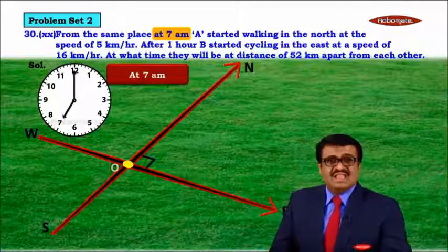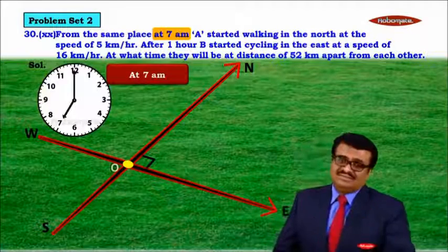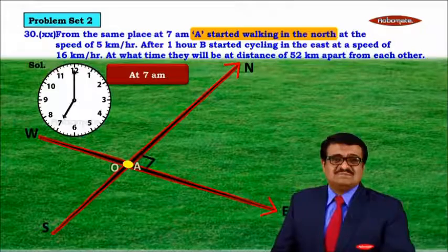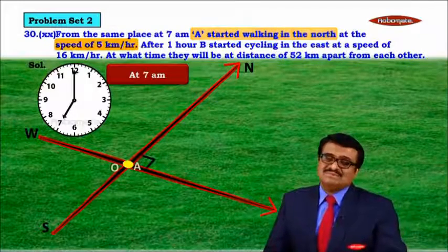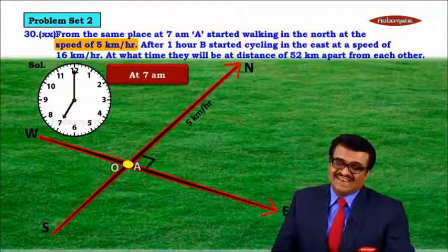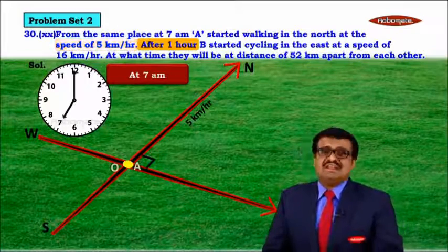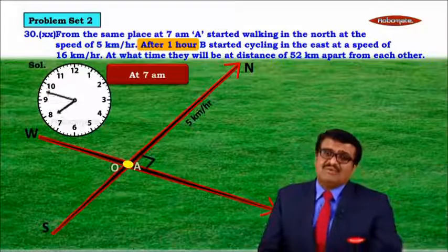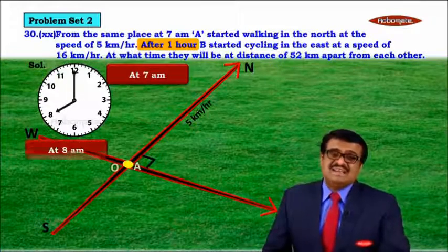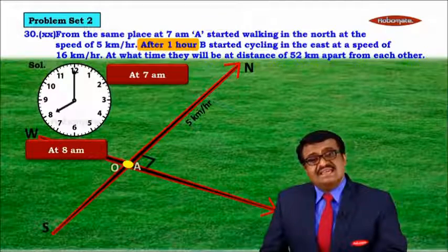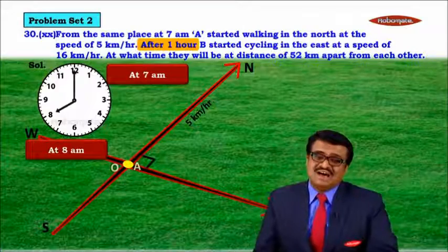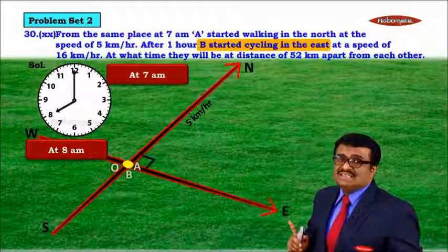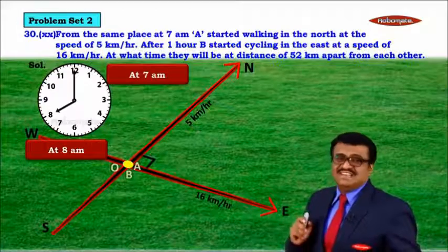At 7 a.m., A started walking in the north direction — that is, upwards — at the speed of 5 kilometers per hour. After one hour, that is at 8 a.m., B started cycling in the east direction at the speed of 16 kilometers per hour. So the speed of A is 5 km/h and the speed of B is 16 km/h.